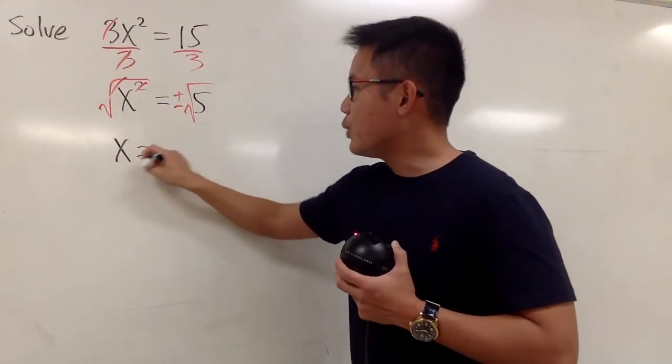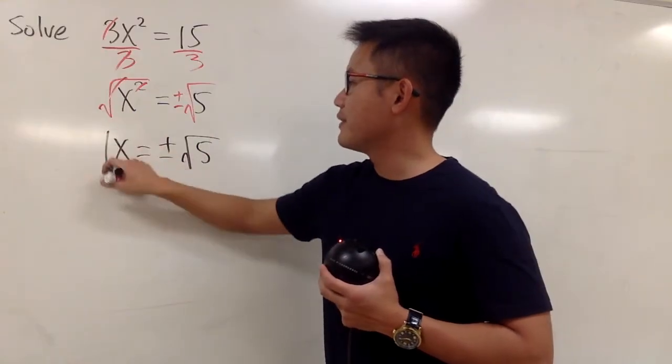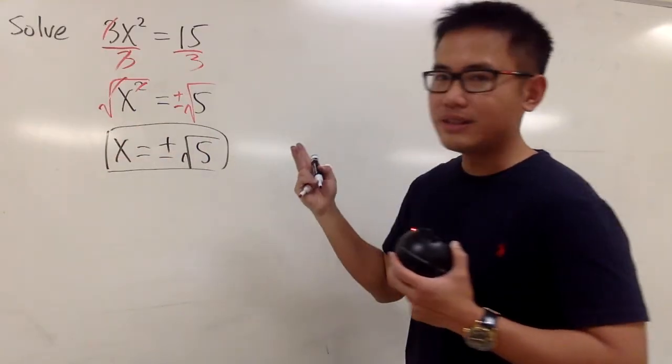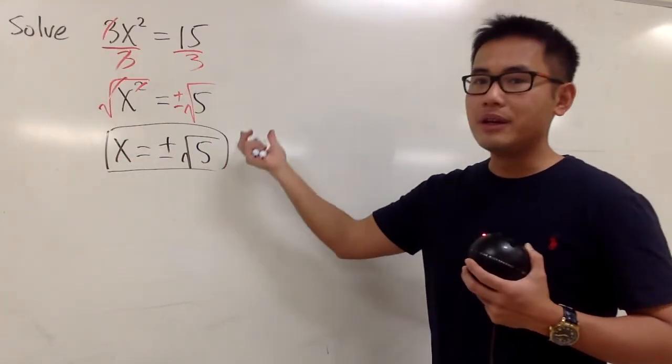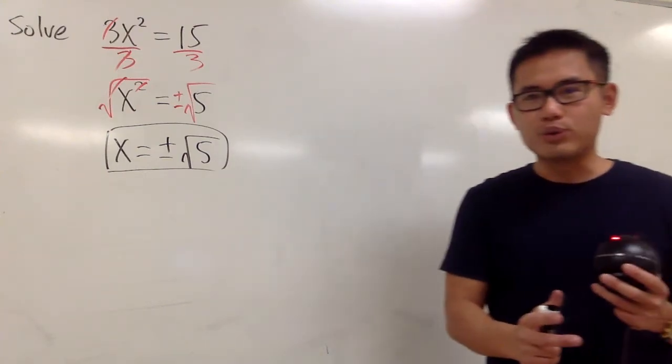Anyway, the final answer is x is equal to positive or negative square root of 5. And in fact, we have two answers for this, right? And this is how we write it down. The first one is positive square root of 5, and the second one is negative square root of 5.